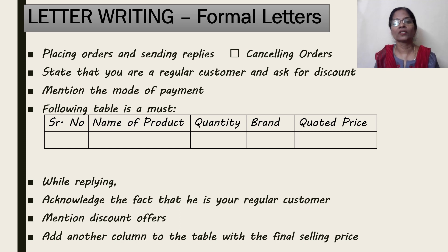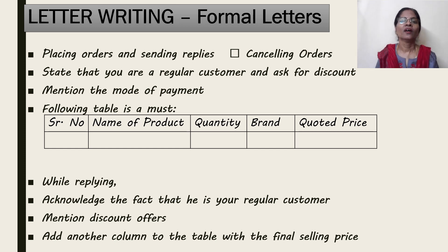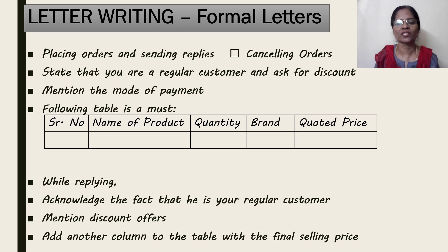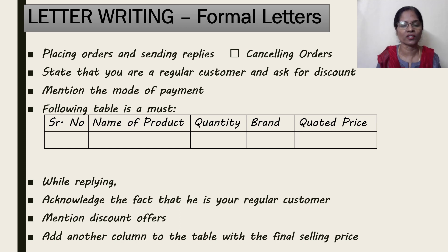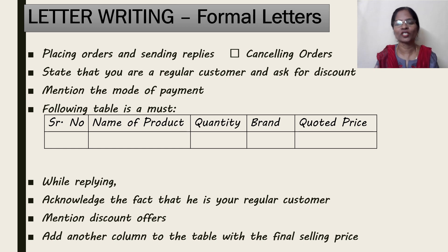When placing orders, we usually write only for bulk orders or for a very expensive product. State whether you are a regular customer and ask for a discount; also mention the mode of payment, which is very important these days with online payments. Add a table to your letter clearly showing the product required, quantity, brand, quoted price, and the discount you're asking for. When replying to an order, acknowledge the customer, mention if they are a regular customer, state the discount offer, and add a final price column to the table so the buyer knows whether to proceed.